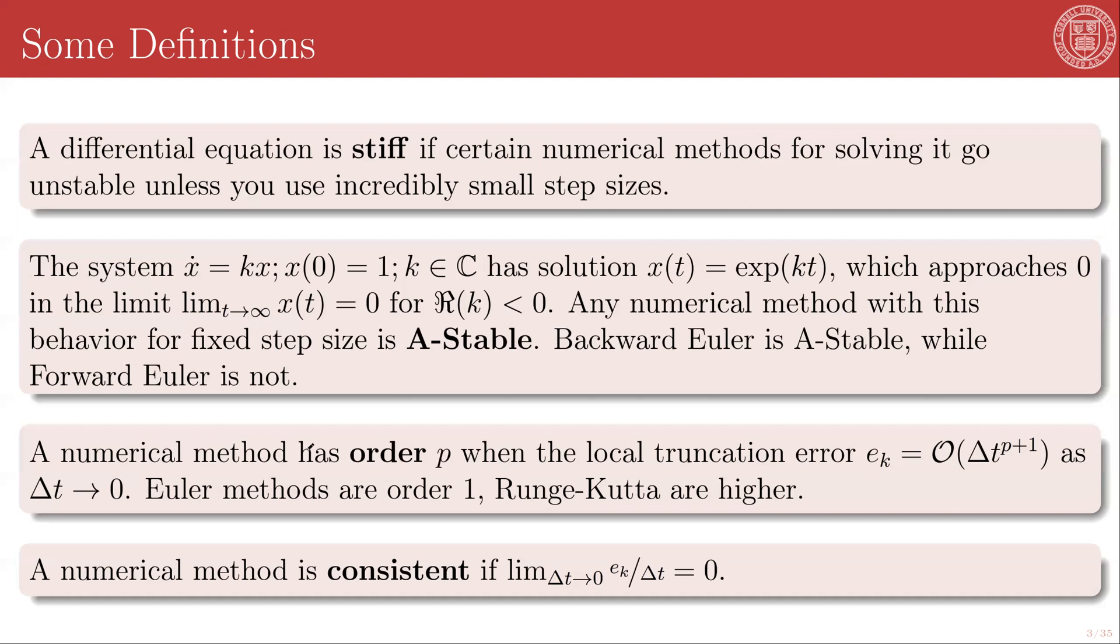A few more definitions. A numerical method has order p when the local truncation error eₖ is of order Δtᵖ⁺¹ as Δt goes to 0. The Euler methods, both forward and backward, are order 1. So order p really tells you about the order of linearization that you're approximating. The Runge-Kutta methods, which we will introduce shortly, are of arbitrarily higher order. And finally, a numerical method is called consistent if the limit as Δt goes to 0 of the ratio of the local truncation error eₖ to the step size Δt goes to 0 as well.